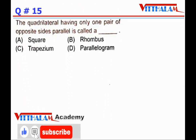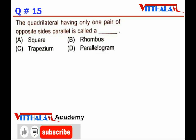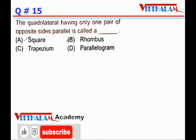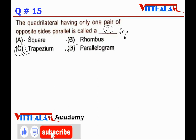The quadrilateral having one pair of opposite sides parallel is called a trapezium. In a square and rhombus both pairs are parallel; in a parallelogram both pairs are parallel; but in a trapezium only one pair is parallel. Answer is C.